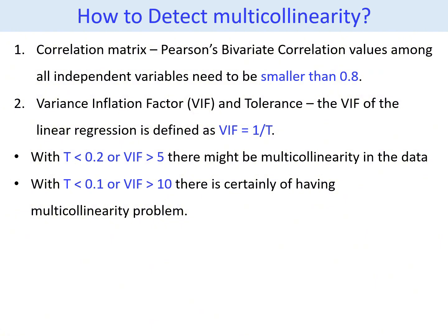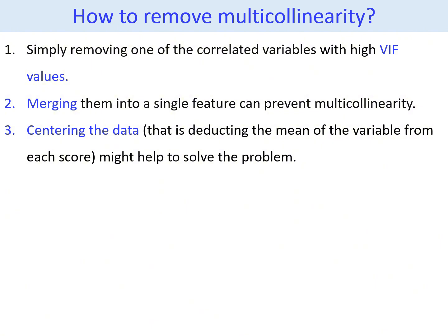The second method is the Variance Inflation Factor (VIF) and tolerance. The VIF is defined as VIF equals 1 divided by tolerance, or VIF equals the reciprocal of tolerance. Thus, if the tolerance value is less than 0.2, or VIF is greater than 5, there might be a multicollinearity issue in the data. After identifying multicollinearity, it must be addressed before proceeding. There are two main approaches: the first involves removing one of the correlated variables with a high VIF value, as high correlation suggests redundancy. The second approach is to combine the highly correlated variables into a single variable.